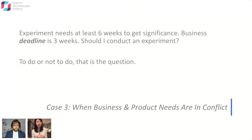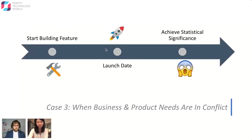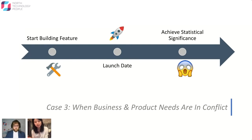The last case study is one that often occurs at startups or mid-size companies: when business needs and product needs are in conflict. I'm sure some of you have experienced the data team saying 'we should run this experiment for six weeks' while the business team says 'you only have three weeks.' In this case, we started building a feature, but the business team wanted to launch it to everyone before the holiday season to maximize exposure. Based on pre-analysis, we knew it was unlikely we'd have statistical significance before the required launch date.